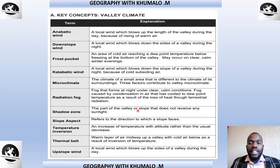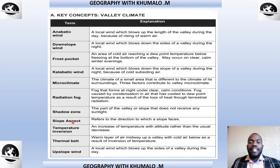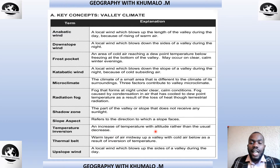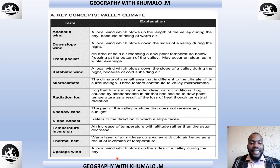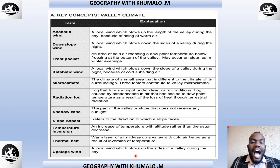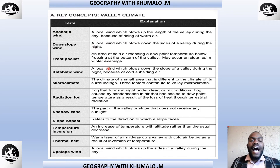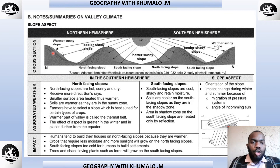A shadow zone is the part of the valley or slope that does not receive any sunlight. Slope aspect refers to the direction to which a slope faces. Temperature inversion is an increase of temperature with altitude, rather than the usual decrease. The thermal belt is the warm layer of air midway up the valley, with cold air below, as a result of inversion of temperature. Upslope winds are anabatic winds; downslope winds are catabatic winds.